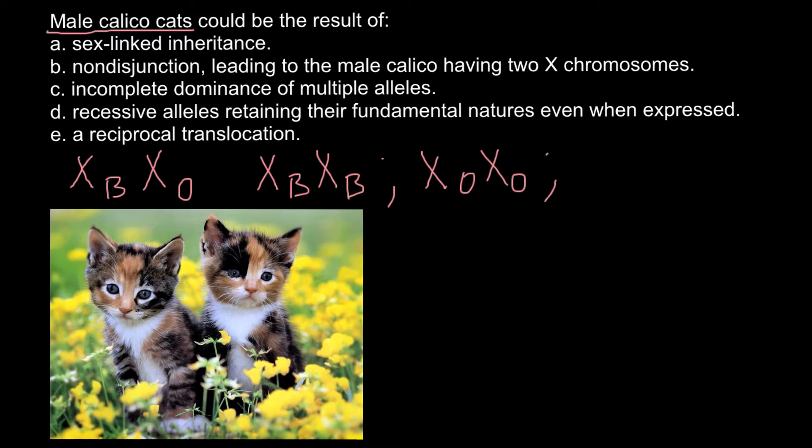And of course, the third variant here would be X-B and X-O. So such cat, this would be female, as you see, and such cat would express two colors simultaneously. But this is not going to be a mixture or intermediate color. This is going to be a mixture of two colors. But each color would be present as a patch of the color. And why this happens, and here is explanation.